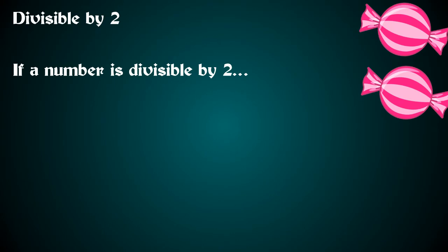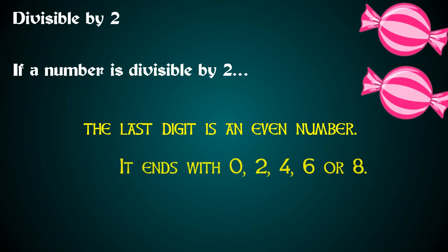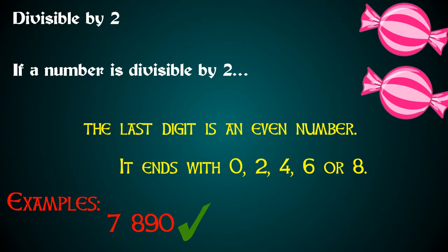Let's begin with numbers that are divisible by 2. If a number is divisible by 2, the last digit is an even number. That means that it ends with 0, 2, 4, 6, or 8. Let's look at this example: 7,890. Does that end with one of those digits? Yes, it ends with a 0, so it's divisible by 2.